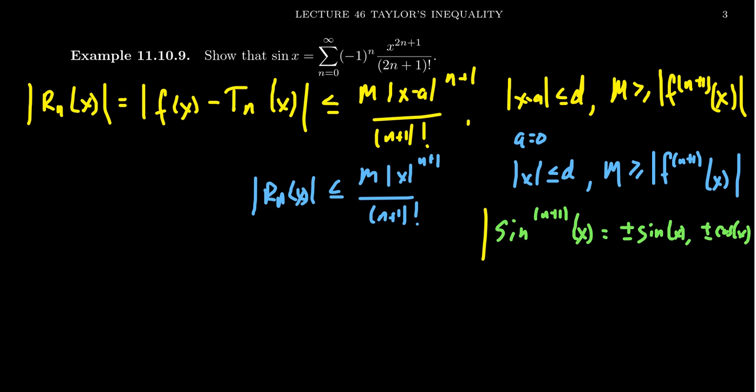If we take absolute values of the derivatives of sine, the plus or minus becomes completely irrelevant. We need a number that simultaneously bounds sine and cosine, and we can use the number 1. That's our m value. The number 1 will bound above all of the derivatives of sine, it doesn't matter which one you use.